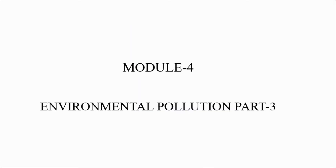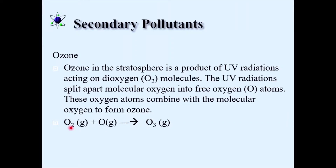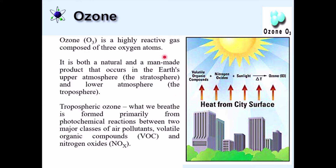Welcome to the online classes, environmental pollution part 3. Today's topic is ozone. A molecular oxygen combines with nascent oxygen in the presence of UV radiation to get converted into ozone. So molecular oxygen combining with elemental oxygen in the presence of UV radiation produces ozone. This is how ozone is formed in the stratosphere. Ozone is available in two different places: the troposphere and the stratosphere. It is a highly reactive gas composed of three oxygen atoms.